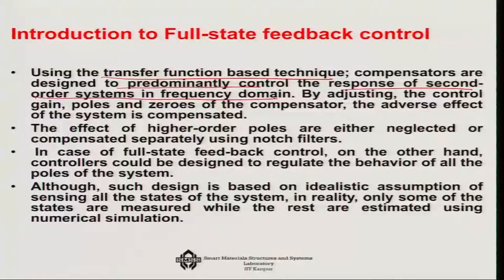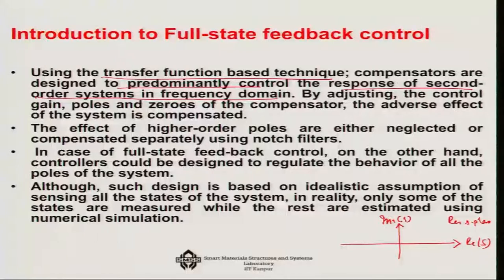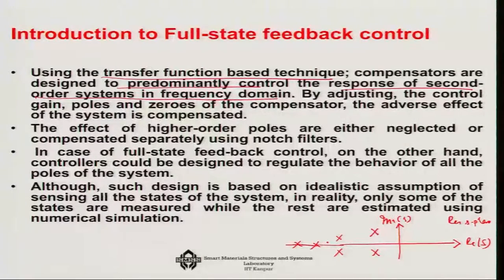However, if there are higher-order poles — as you can see in the S-plane with real and imaginary axes — for a classical control second-order system there are only two poles. But for a multi-body system with multiple degrees of freedom, you may have more poles, possibly much further away on the imaginary axis. If you have these higher-order poles, you will either neglect them or compensate separately using notch filters.